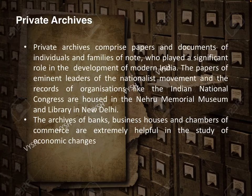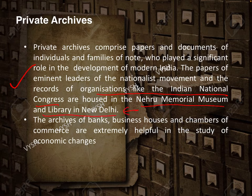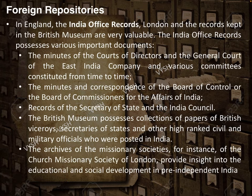Private archives — like diaries or personal papers written by an individual or family — were also saved. Most organizations like the Indian National Congress had their papers saved; for example, the Nehru Memorial Museum and Library in New Delhi preserves them. Banks, business houses, and chambers of commerce also had a lot of economic discussion preserved. Foreign repositories — materials taken from India to outside countries — were also saved there.